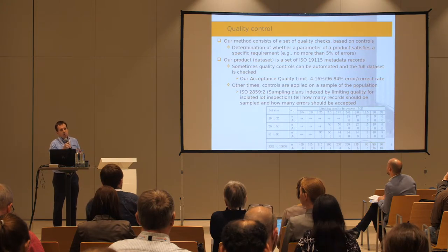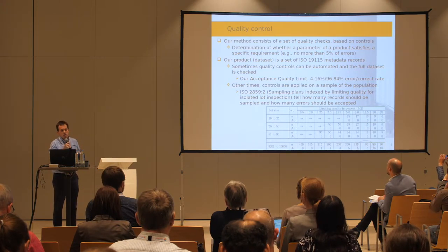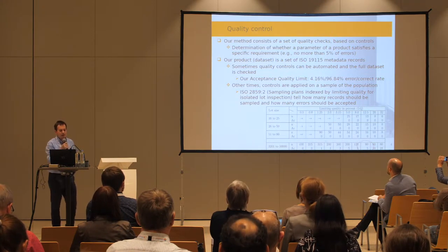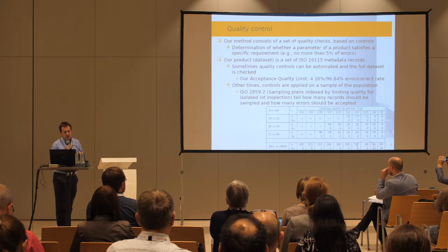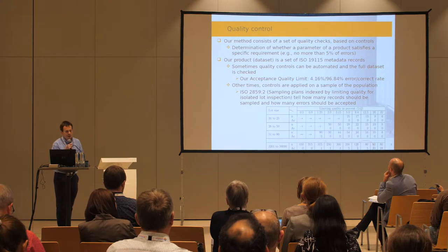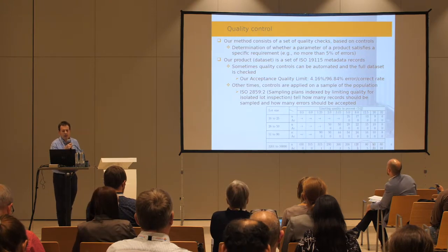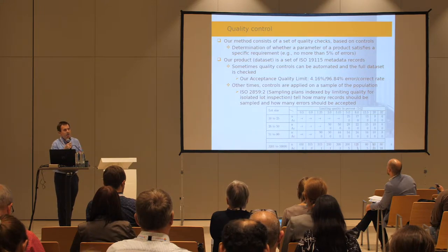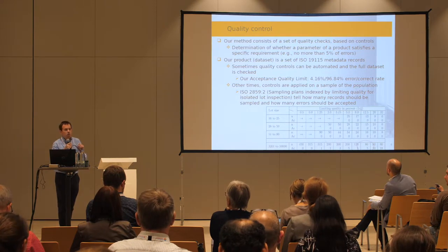In the case of manual controls, we use the tables of ISO 2859 part 2, which is a standard for general quality — specifically about sampling plans by limiting quality for isolated load inspection. This standard's tables tell us how many records should be sampled and how many errors we should accept to pass a given control.